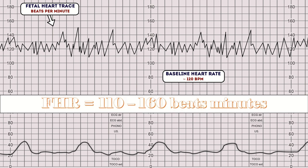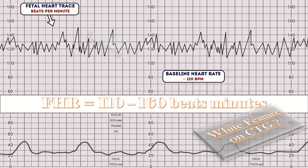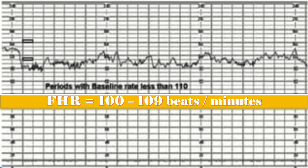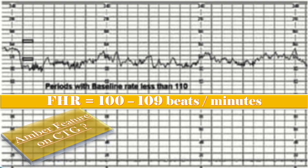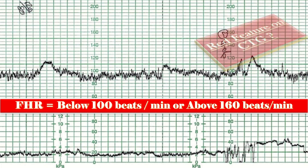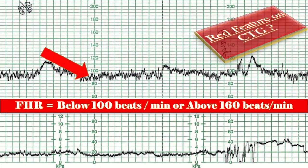When we check the fetal heart rate on CTG and it is found to be 110 to 160 beats per minute, that is the white feature. When there is an increase in baseline fetal heart rate of 20 beats per minute or more from the start of labor or since the last review an hour ago, or 100 to 109 beats per minute, or we are unable to determine the baseline, these are amber features. When the fetal heart rate is below 100 or above 160 beats per minute, that is the red feature.